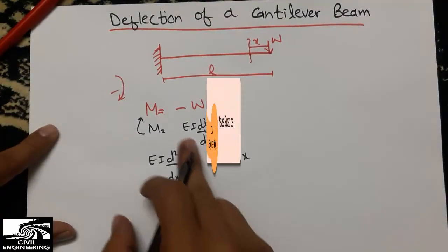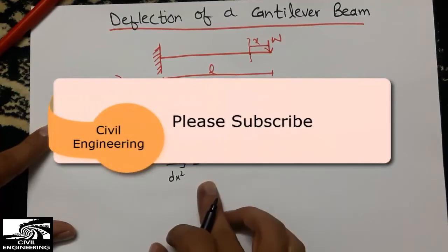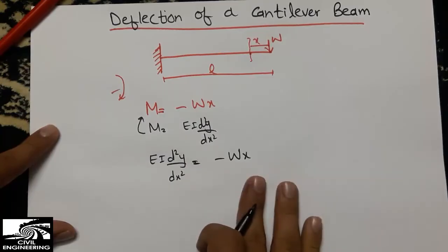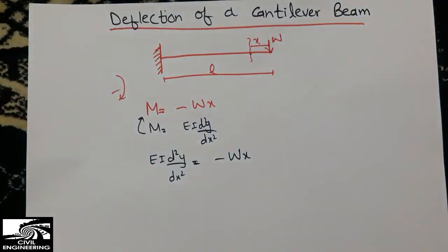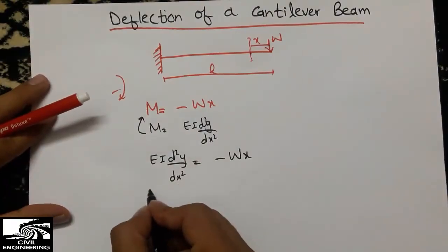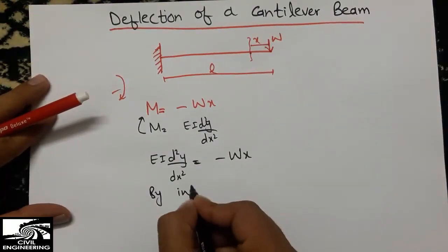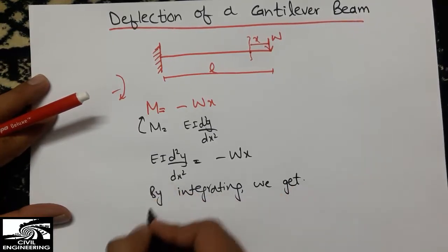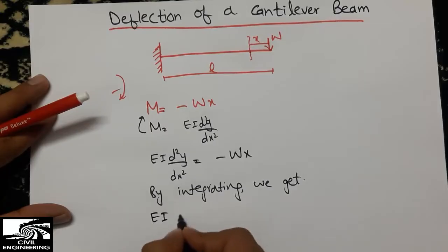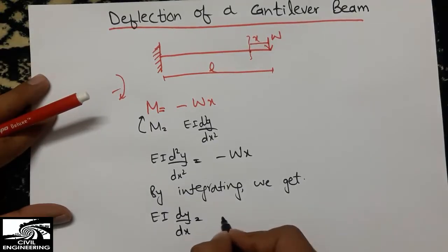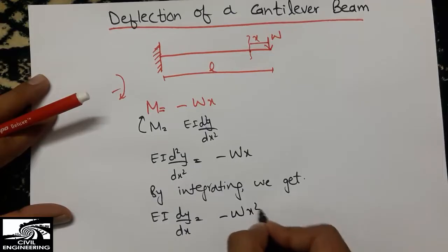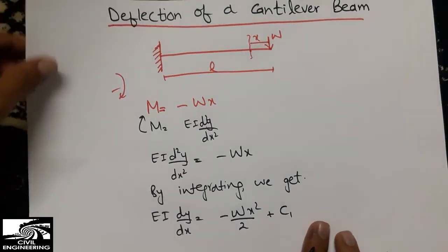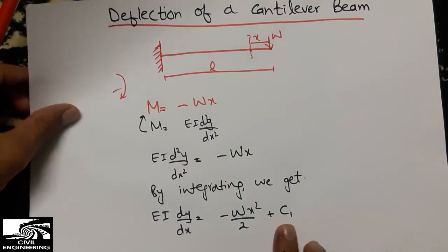Now we will integrate this equation to find the slope, and then we will integrate the slope equation to find the deflection. By integrating, we get EI times dy/dx equals minus Wx² divided by 2, plus a constant C1.